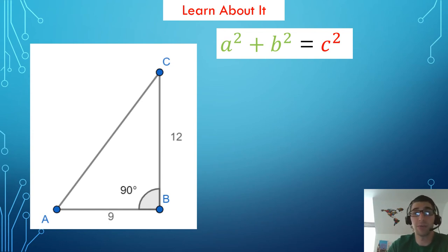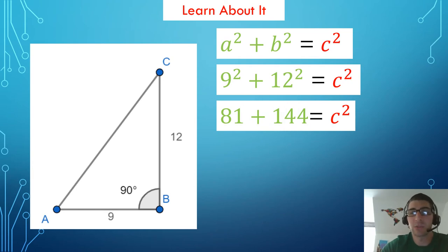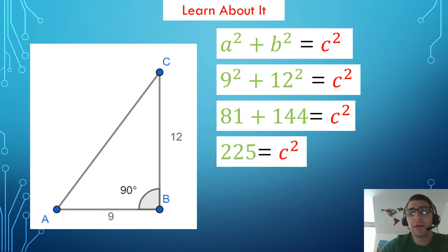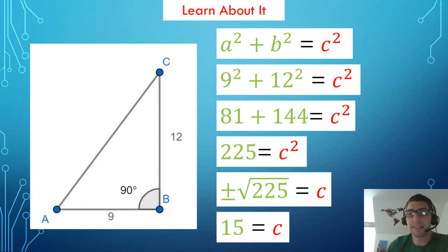We'll see an example where they give us a hypotenuse in a few minutes. So let's find the length of segment AC from the Think About It, which is the hypotenuse. We can use the Pythagorean theorem because this is a right triangle with a 90-degree angle. I am going to substitute in 9 for A and 12 for B, then solve for C. That means squaring 9 and 12 to get 81 and 144, adding those to get 225. To find C, we take the square root of both sides. Since we are talking about a distance, we only consider the positive square root. The square root of 225 is 15, so segment AC has a length of 15.